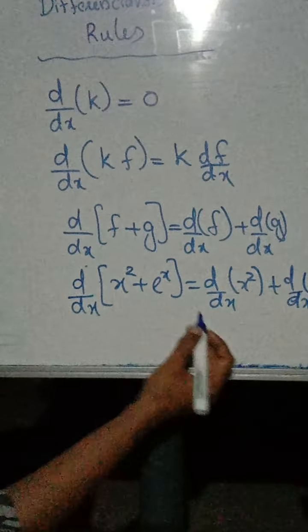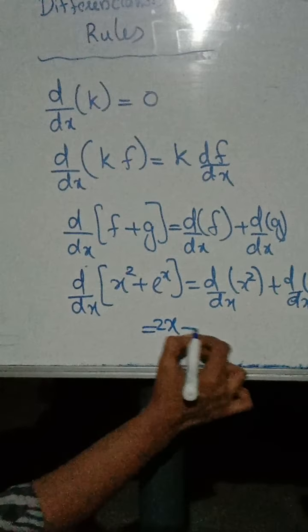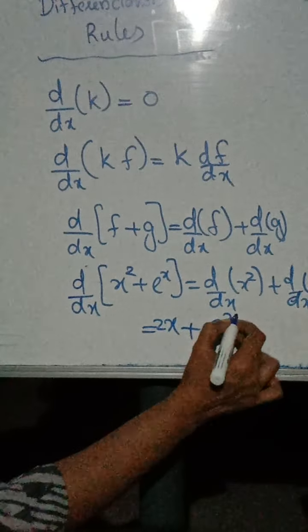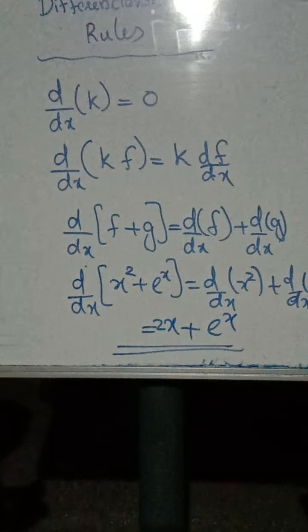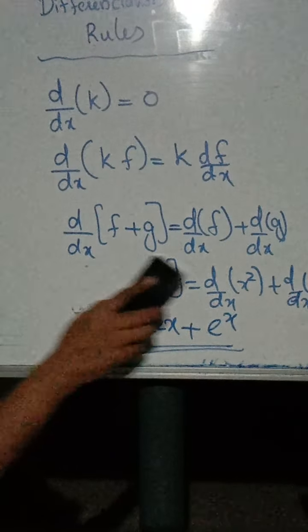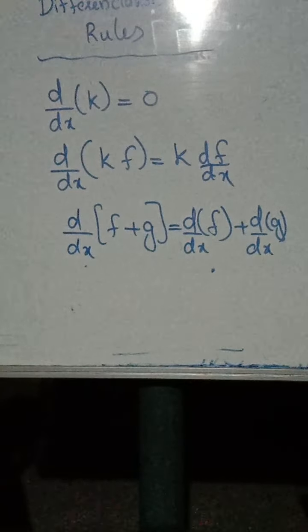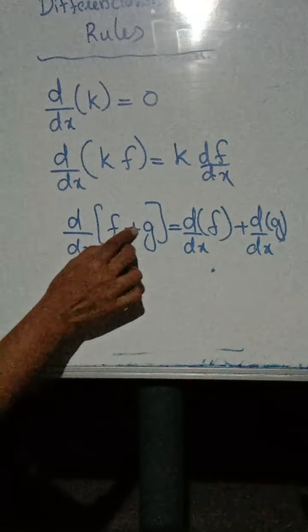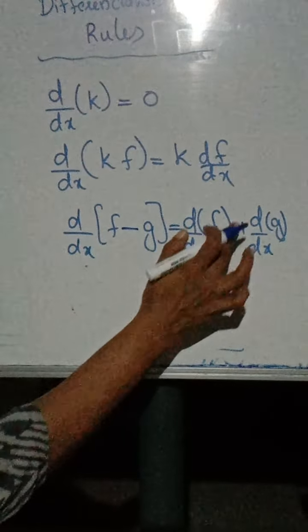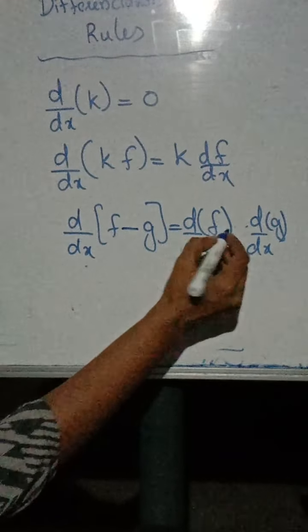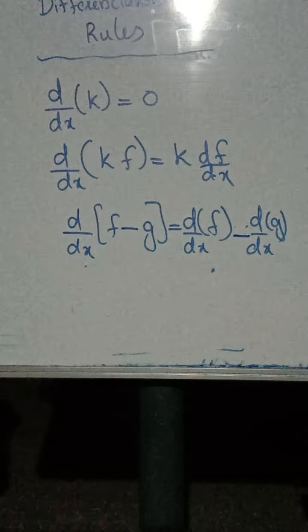The derivative of x square is 2x, and the derivative of e raised to x is e raised to x. Similarly, in the case of subtraction, d by dx of f minus g equals df by dx minus dg by dx.